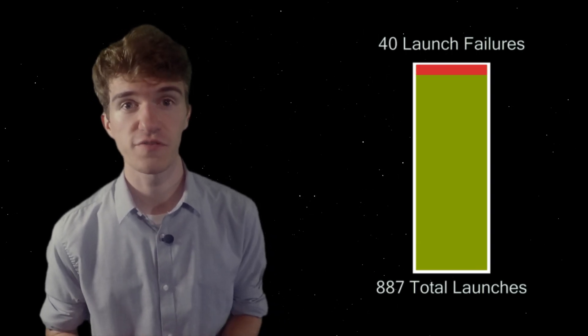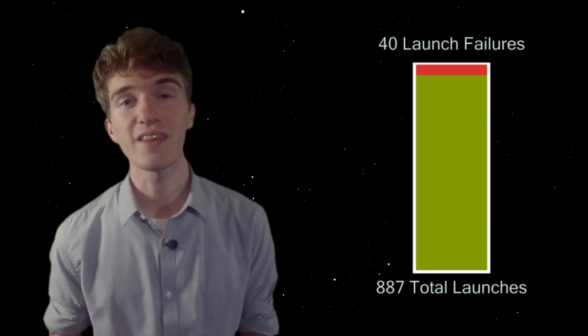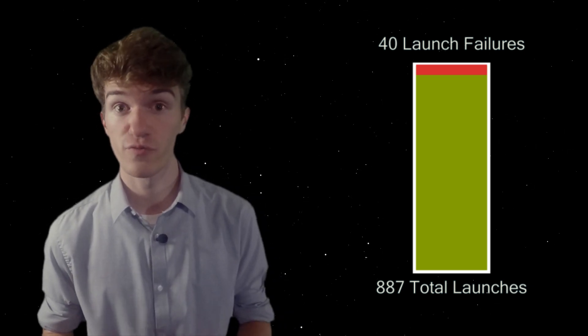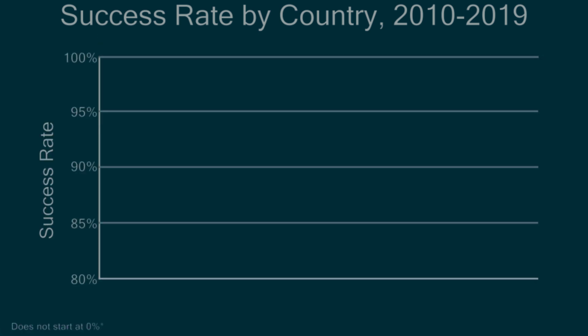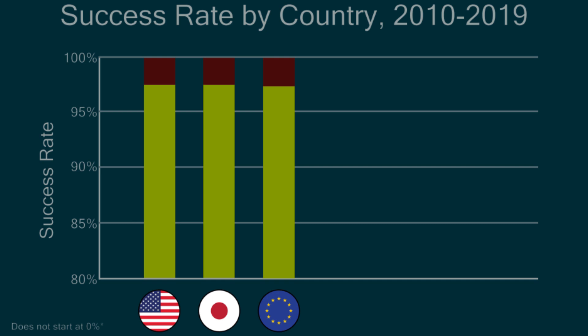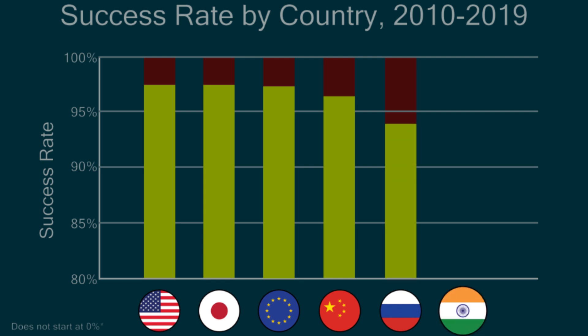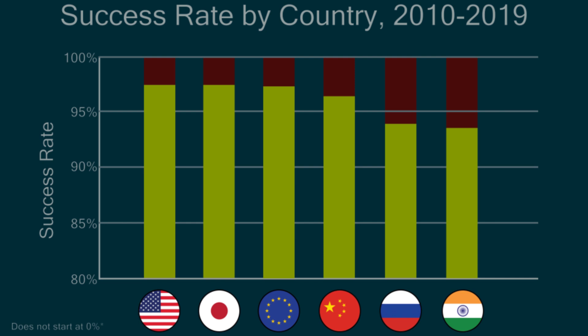Not every single one of these launches succeeded — in fact, 40 of them had some form of launch failure, making it roughly a 95% success rate, meaning that roughly 1 out of every 20 rockets that launch from Earth will see some form of failure. Looking at success rates by country: the United States and Japan have the highest at roughly 97.3%, followed by the European Union at 97.2%, then China at 96.3%, Russia at 93.8%, and India at 93.3%.